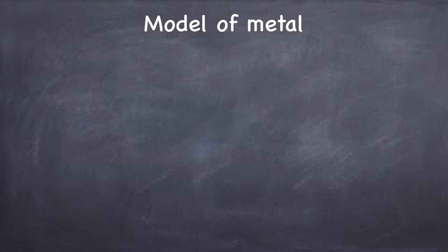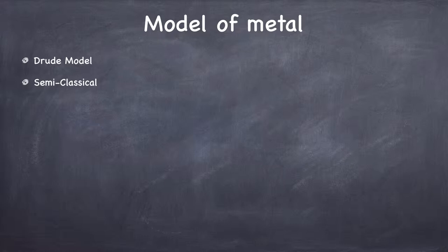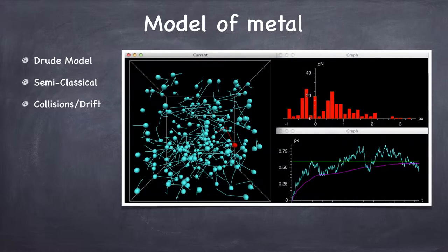Now let's look at our model of a metal. It's called the Drude model — a semi-classical model, which means it takes into account some quantum mechanical effects but also uses classical language to describe what's going on: things like electron trajectories, forces, and the momentum principle. We're going to use this semi-classical model. The idea is we have particles bouncing around all willy-nilly inside the material. In the absence of a field, these guys are just as likely to move to the left as to the right, so on average with no net field inside the conductor, there's no current — just a distribution of momentum going in different directions.